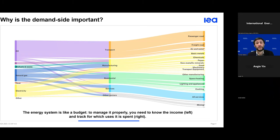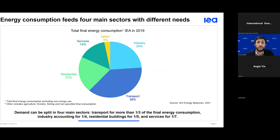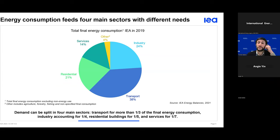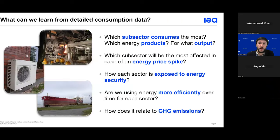At the IEA's energy data center we split energy consumption into four main sectors: industry, which covers manufacturing and other industries like mining; services; the residential sector; and the transport sector. In IEA countries, transport is the most consuming sector with more than one third of consumption, then industry with about a fourth, residential buildings with about 20 percent, and services at 15 percent. These shares vary greatly depending on industrial development, services maturity, or country size.